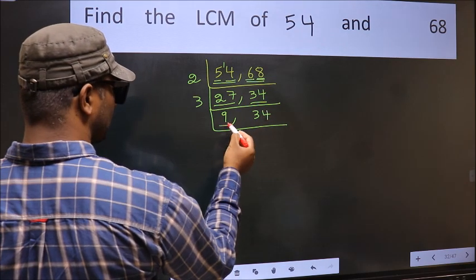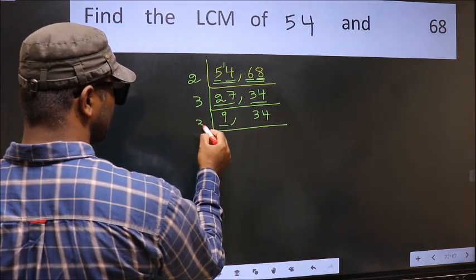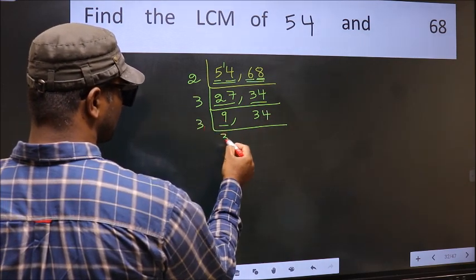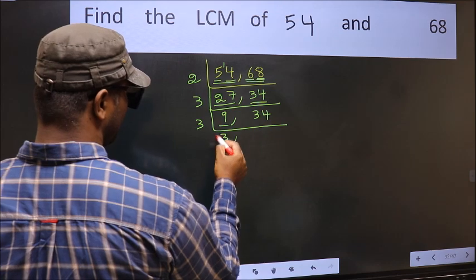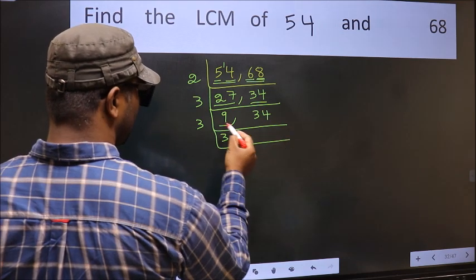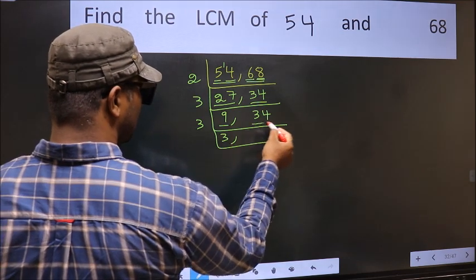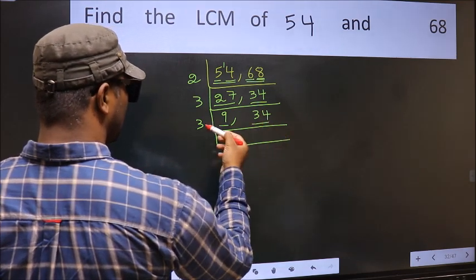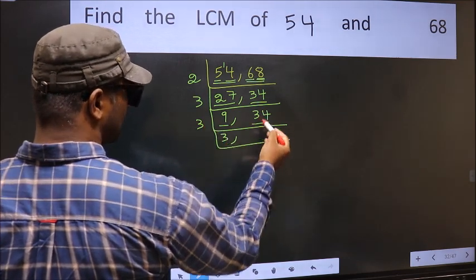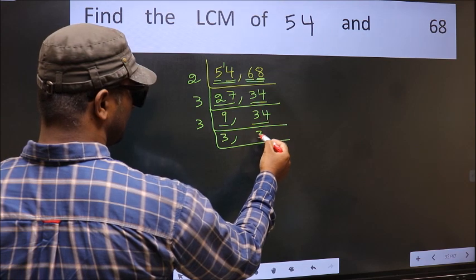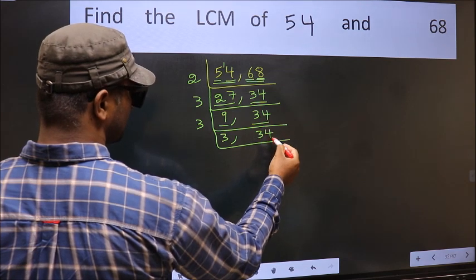Now here we have 9. 3×3 is 9. The other number is 34, which is not divisible by 3, so we write it down as it is.